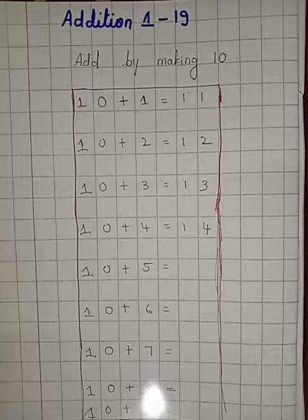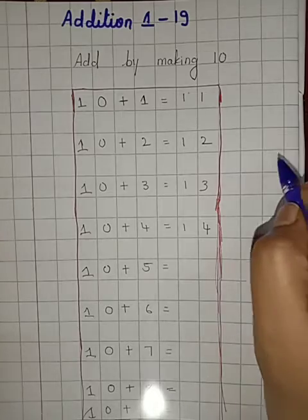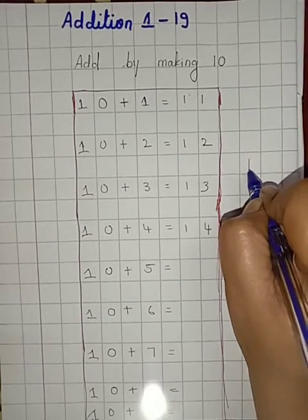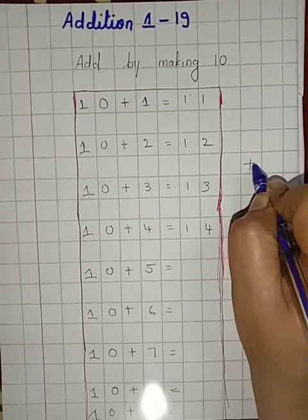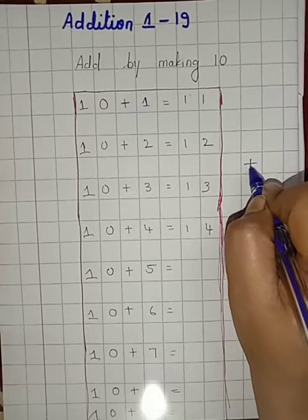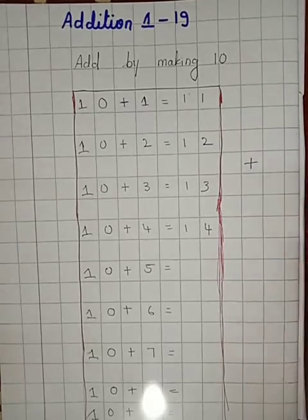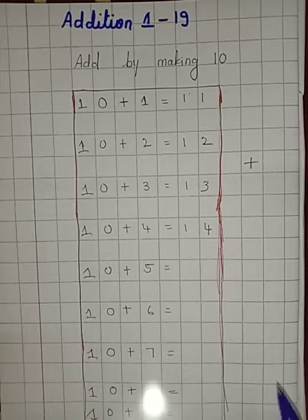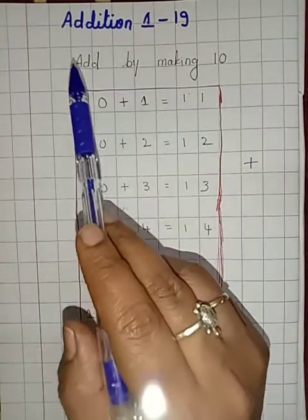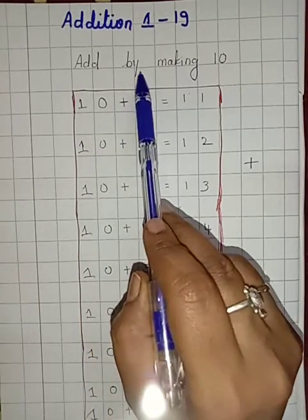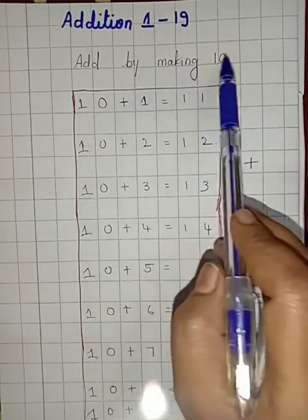So what is the symbol of addition? That is plus. So this is the symbol of addition. If this plus is there then we have to add the numbers together. So here we are going to learn the concept which is called add by making 10.